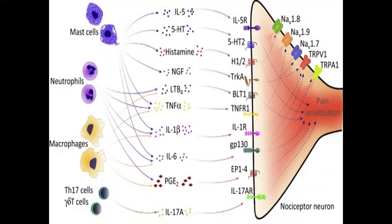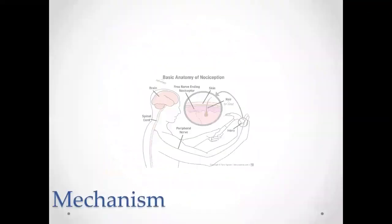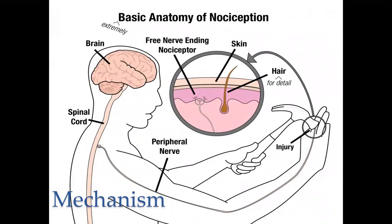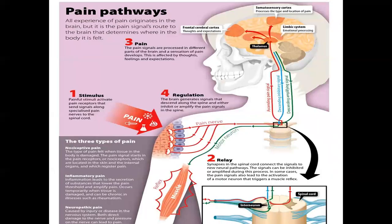As we can see in the mechanism, if somebody got hurt on the finger or anywhere on the body, the nociceptors present below the skin get stimulated, and the signal reaches the spinal cord and then to the brain, where we perceive the pain. The first step in this pain pathway is that any stimulus from the peripheral part activates the pain receptors, which send signals along specialized pain nerves to the spinal cord.